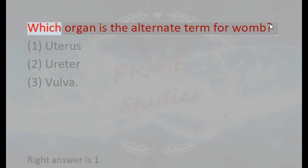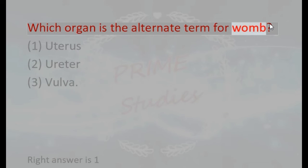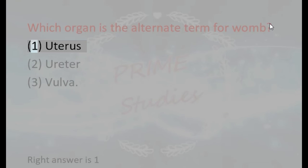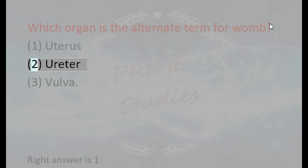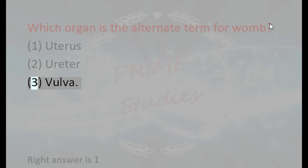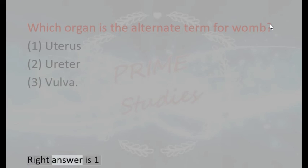Which organ is the alternate term for womb? 1. Uterus, 2. Ureter, 3. Vulva. Right answer is 1.